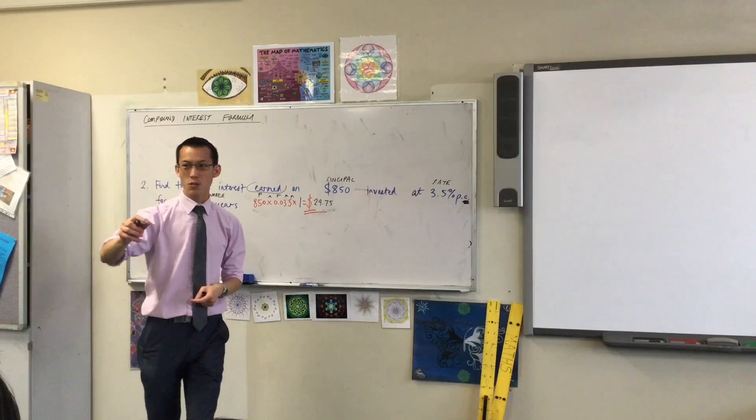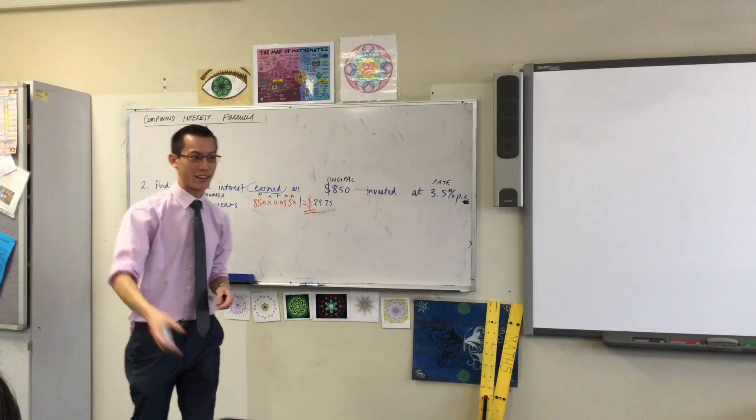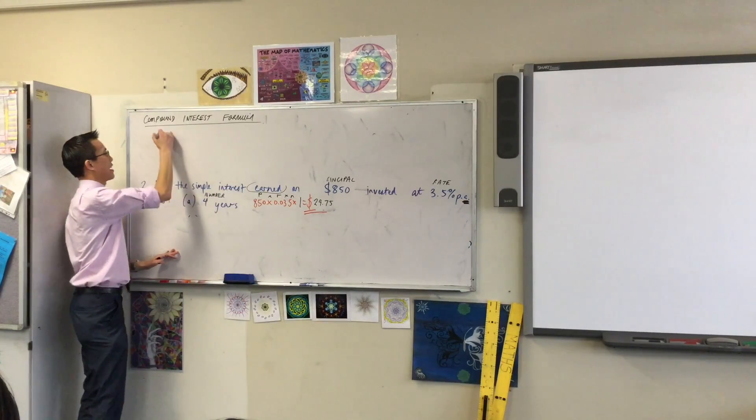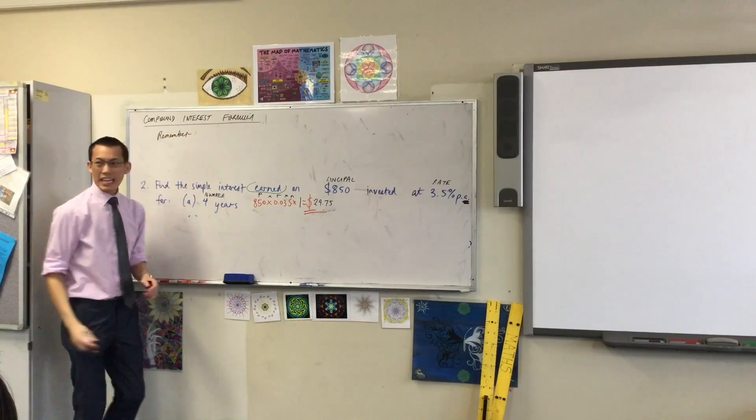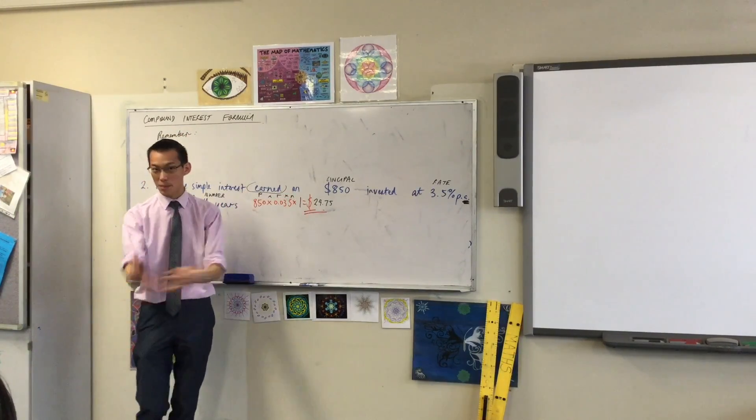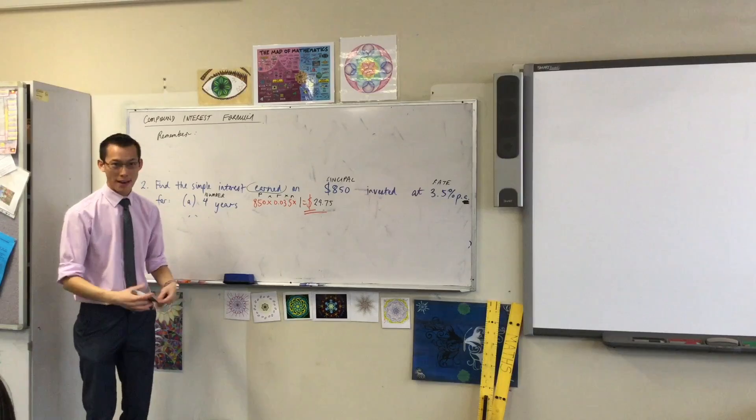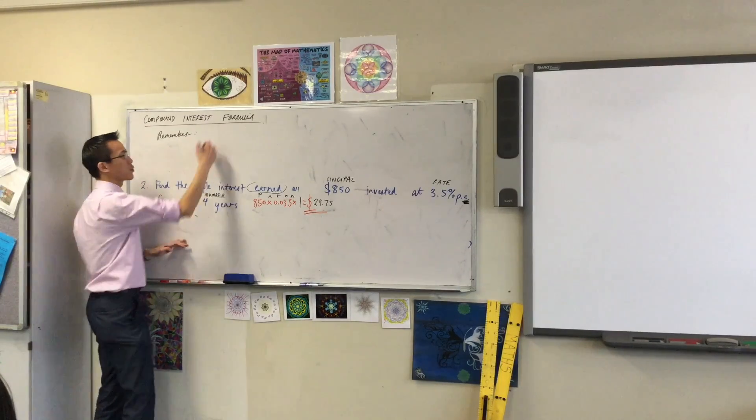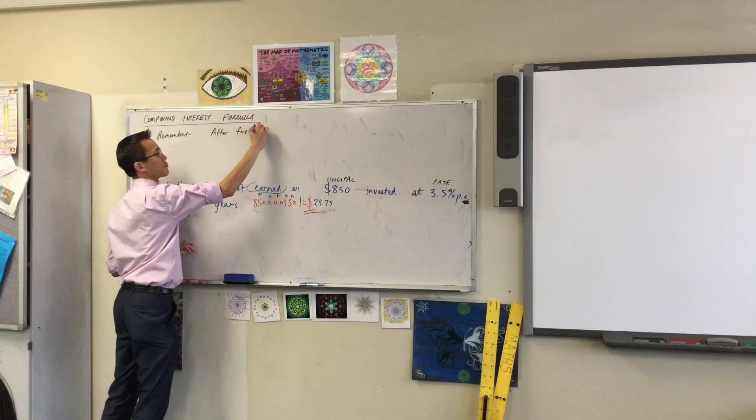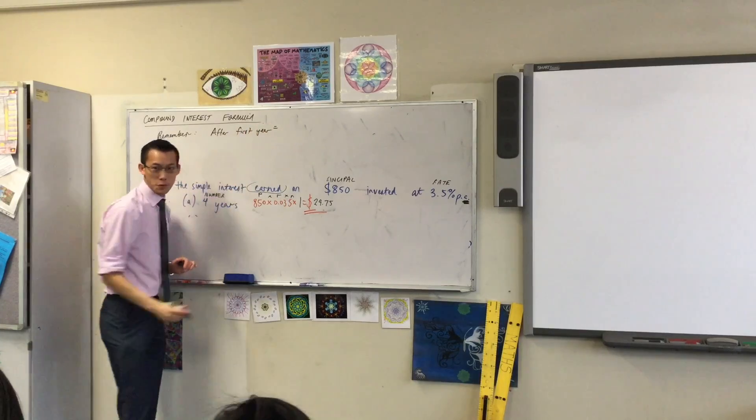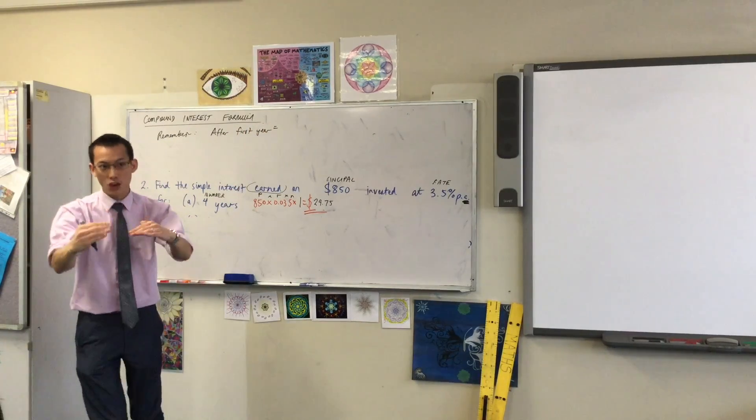So I actually want us to write down the work of the correspondence to what Kate just said. So under here I want you to write down, remember, if we were to change this from a simple interest bank account to a compound interest bank account, what we're going to do is we're going to say after the first year, and I hope you remember doing this in your work, you had to do it year on year.